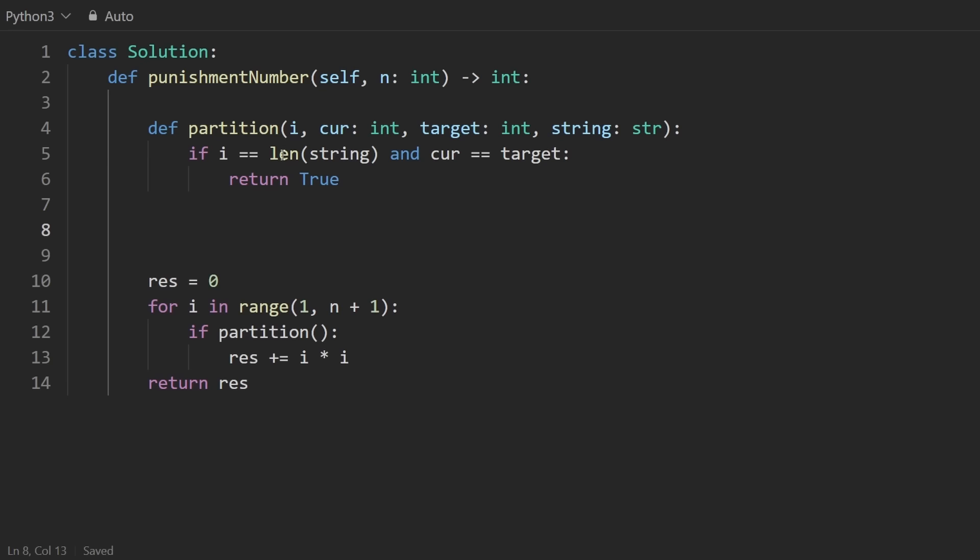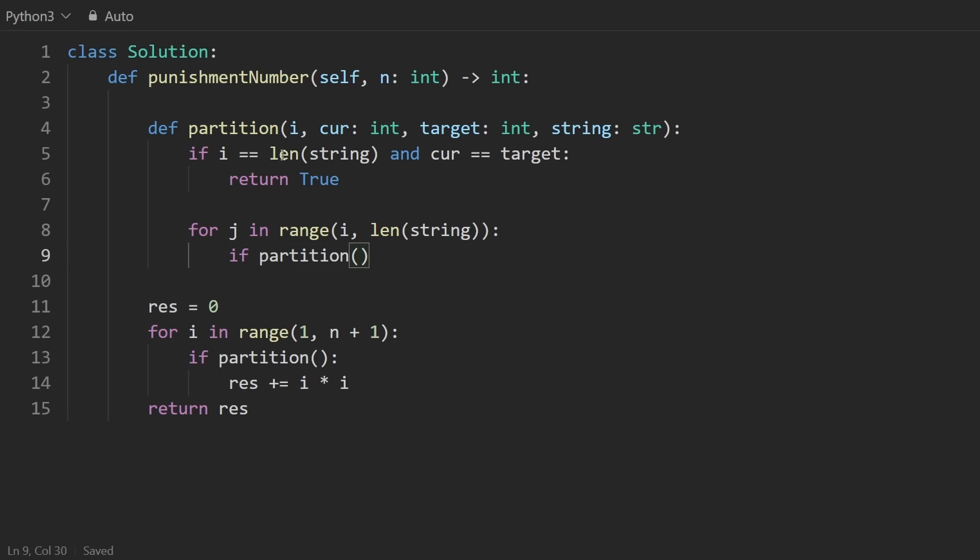Otherwise, we're going to have some branches. How many? Well, it's going to depend on the loop. So here I'm going to do, I guess, for j in range, starting at i and going up until the end of the string. So now this is the recursive case. We're going to check if we can partition the remaining characters. And if that's the case, then we return true. If we never return true from any of these, well, then we can return false.